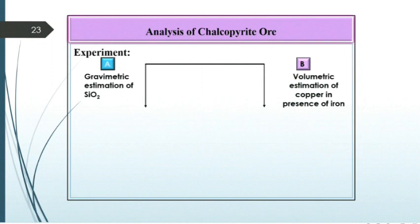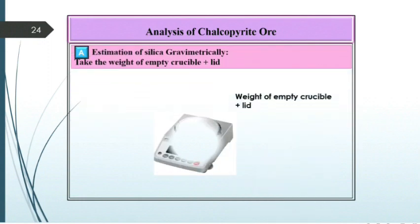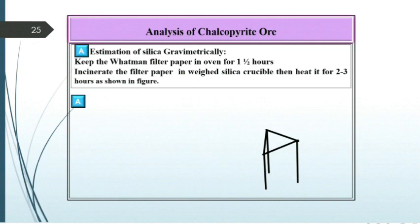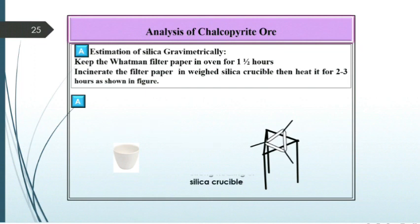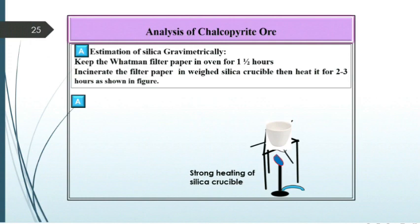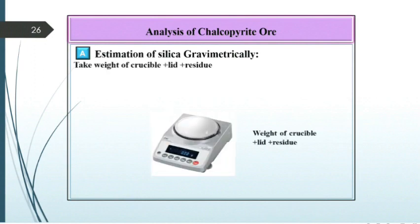Here we have two parts: Part A is gravimetric estimation of SiO2, and Part B is volumetric estimation of copper in the presence of iron. For Part A, estimation of silica gravimetrically: take the weight of the empty crucible plus lid and record it in the observation table. Incinerate the filter paper — take Whatman No. 41 filter paper along with the residue, fold it well, and incinerate it in a previously weighed silica crucible. Keep the silica crucible on a blue flame and heat it strongly for two to three hours.